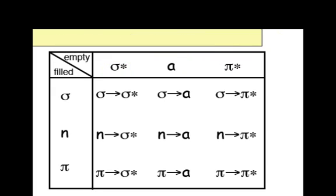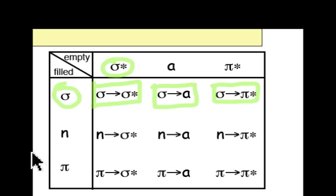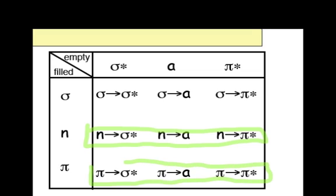So if the highest occupied molecular orbital in a particular reaction involves sigma on the nucleophilic partner, then that orbital could combine with the electrophilic partner — which in the case of sigma-star would be a sigma-to-sigma-star interaction if sigma-star happens to be the LUMO. It could be a sigma-to-A or a sigma-to-pi-star interaction if A or pi-star is the lowest unoccupied molecular orbital. The next three possibilities arise from having a non-bonding pair of electrons as the HOMO, and the last three are the possibilities that arise if a pi-bond is the HOMO.